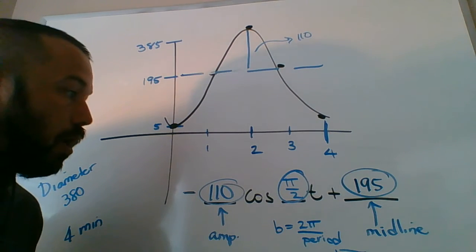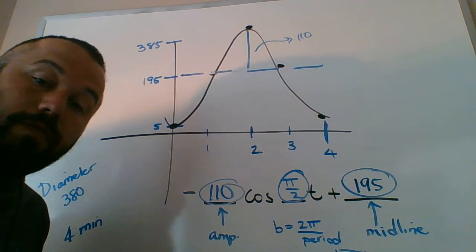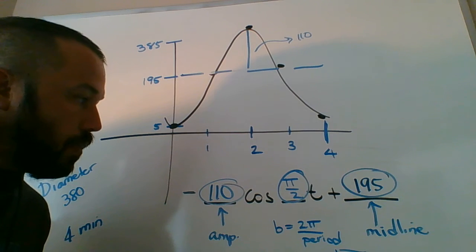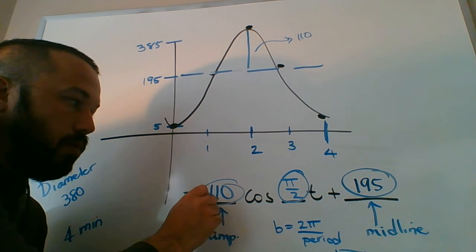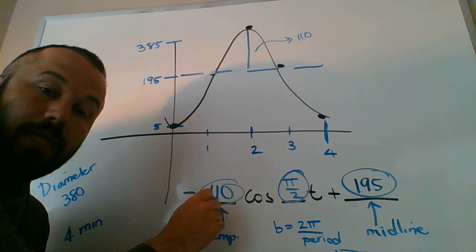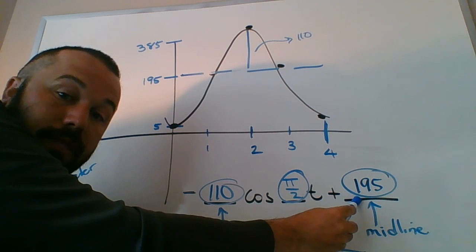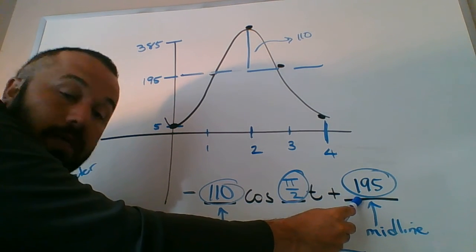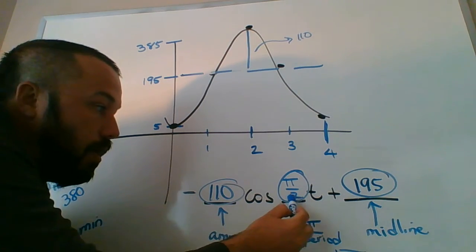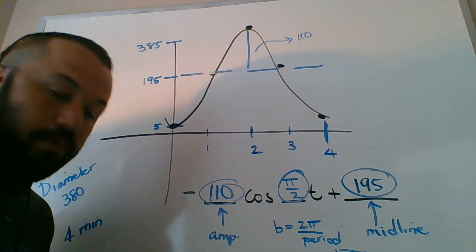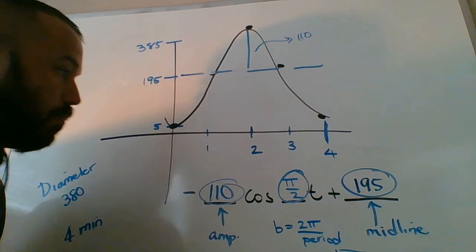So all we need to do for this one is graph it - that's probably the toughest part - and then fill in the amplitude, distance from the midline to the top. The midline itself: how far did this thing get shifted up or down? In this case, the center was up 195. And then the B value: 2π over the period.